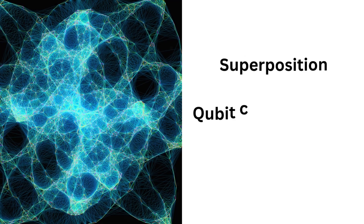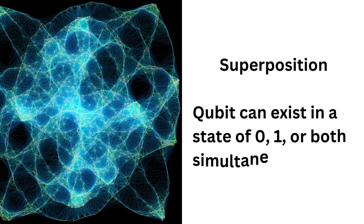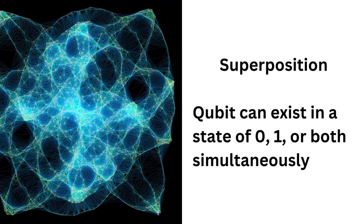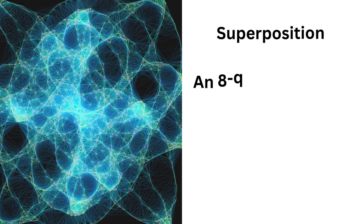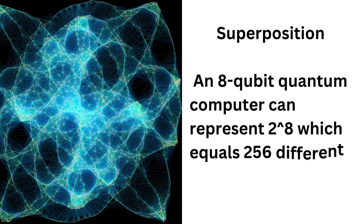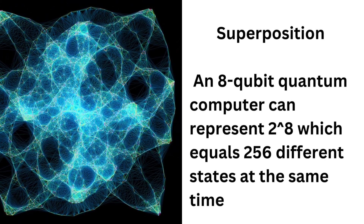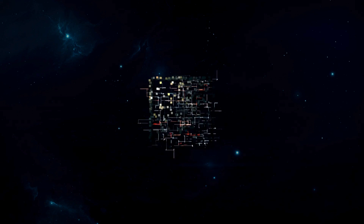Each qubit can exist in a state of 0, 1, or both simultaneously. An 8-qubit quantum computer can represent 2 to the power of 8, which equals 256 different states at the same time.